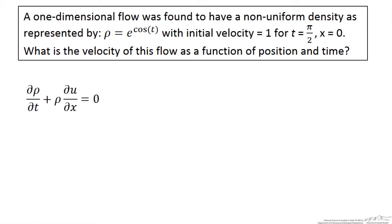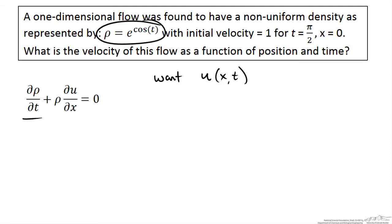At this point we just use our mathematical skills and solve. We are solving for velocity in the x direction — we want u as a function of x and t. We need to get du/dx equal to something so we can separate variables and go from there. First off, we can evaluate d rho/dt. Taking the differential of rho with respect to t, we get negative sine of t times e to the cosine of t.